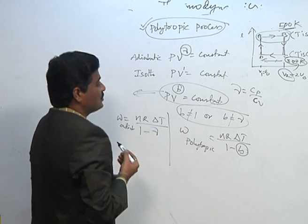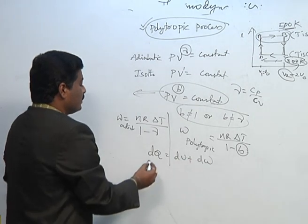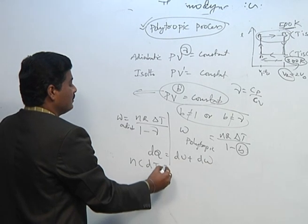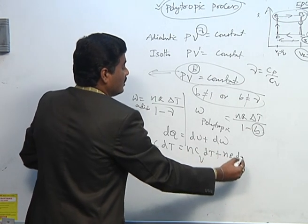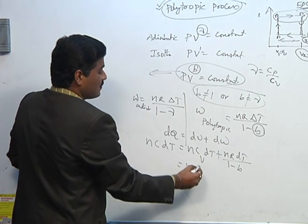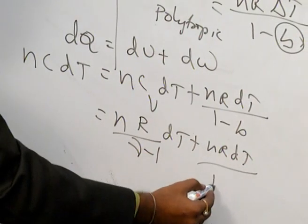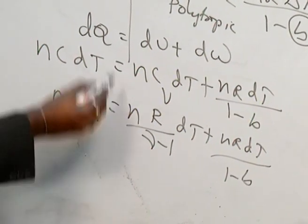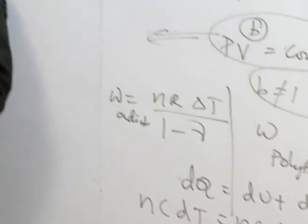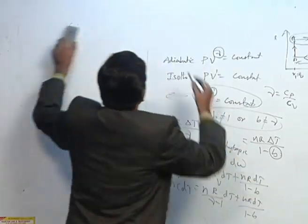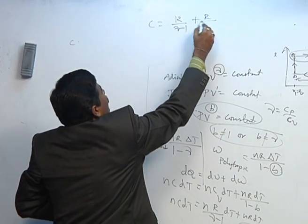Applying the first law to the polytropic process: DQ = DU + DW. We write DQ = nC dT, DU = nCv dT, and DW = nR dT / (1 - n). We know Cv = R/(γ - 1). Substituting: nC dT = n × R/(γ-1) × dT + nR dT/(1 - n). Taking n dT as common, the molar specific heat C = R/(γ - 1) + R/(1 - n).